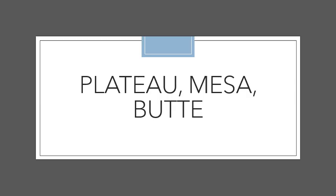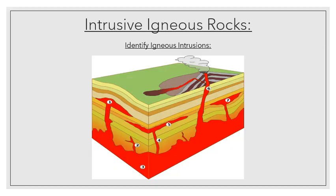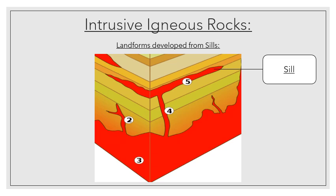I had a question about plateaus, mesas and buttes, and I want us to just quickly revise how they form. To fully understand how these features are formed, we need to refer again to our igneous intrusions — more specifically, the sill part. Plateaus, mesas and buttes form because of the sill, not exclusively, but this is a very common example.